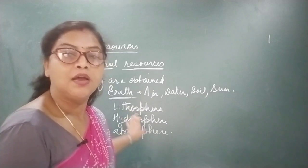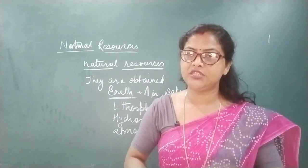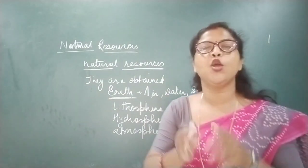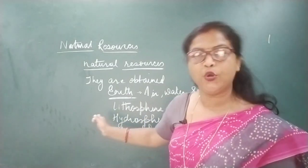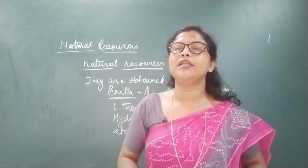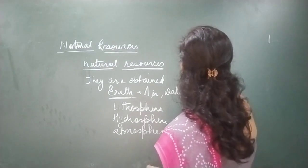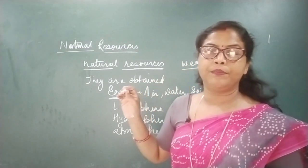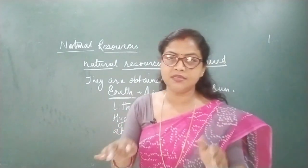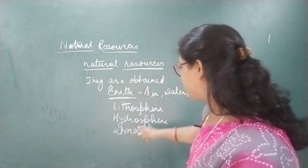Lithosphere is the outermost hard crust of the earth. The outermost part which is very hard is called the land part of the earth. This lithosphere is covered with soil, and this soil is made up of weathered rock. Weathered rocks are broken rocks mixed with humus and other minerals. So the earth's crust — lithosphere — is covered with soil, and that soil is weathered rock.